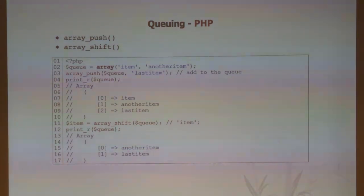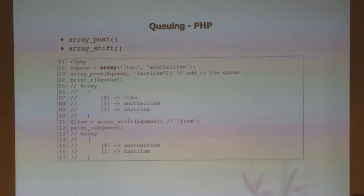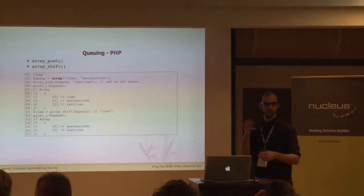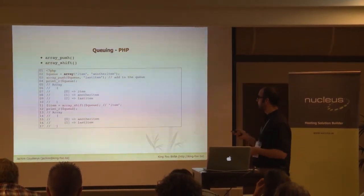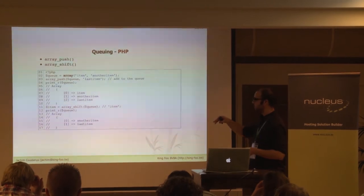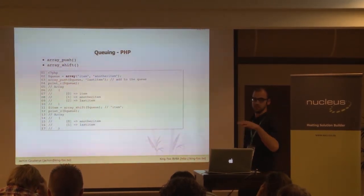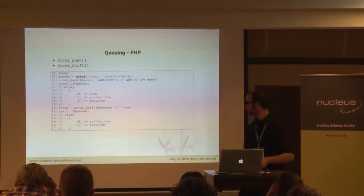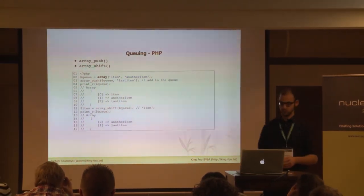If you would write a queue in PHP, this is what it would look like. You have array_push and array_shift. Array_push pushes it on the end of the queue, and array_shift takes the first element of the array and starts processing it. This is not a very useful queue, but this is what queuing looks like in PHP.